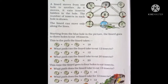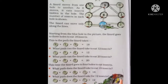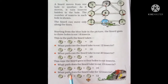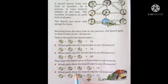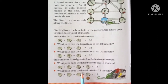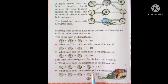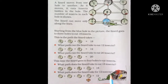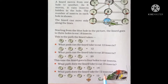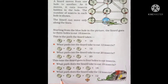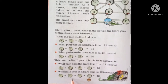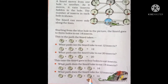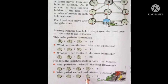Addition. What is the next question, students? What path does the lizard take for 12 insects? We have to make the lizard eat 12 insects through four holes. We have to add four numbers whose total is 12.